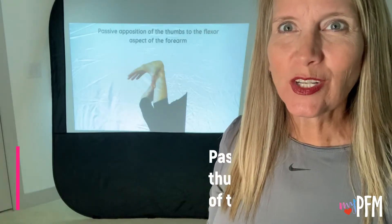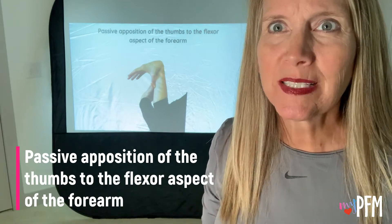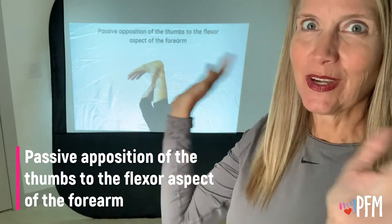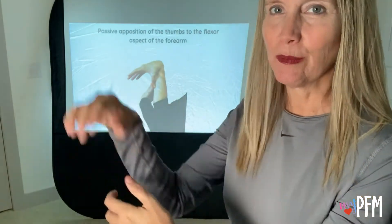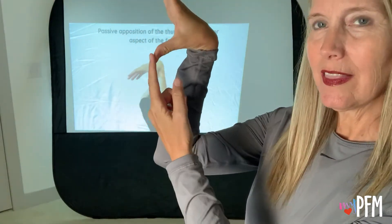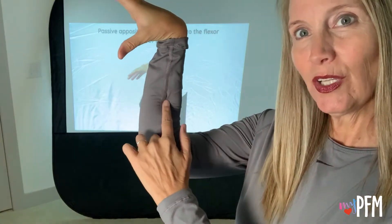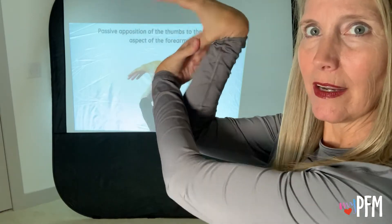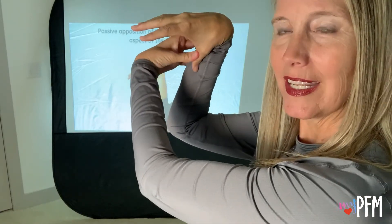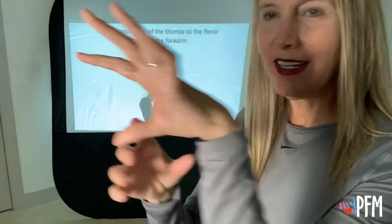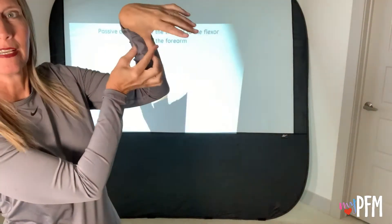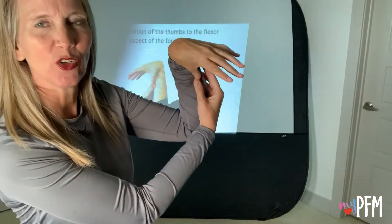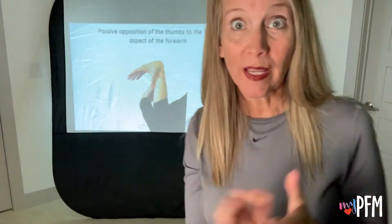The next one is called passive opposition of the thumb to the flexor aspect of the forearm. Basically, we're looking at the thumb and seeing if you can pull it to your forearm. I'll test my right — pretty easy for me to do that. And now my left — again, pretty easy. So both of those would be positive for me.